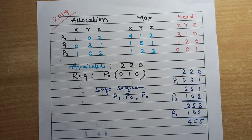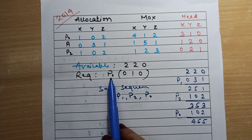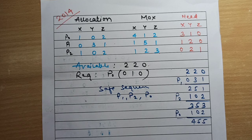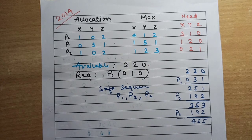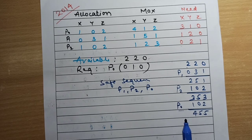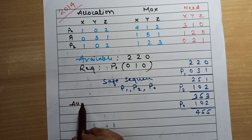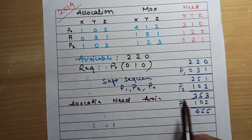The safe sequence is P1, P2, P0. Now let's move on to the second part: we need to check what happens if we allocate the additional request from process P0. Let's pretend we have allocated those resources to P0 and change the scenario accordingly. I will rewrite the allocation, need, and available tables with X, Y, Z columns.